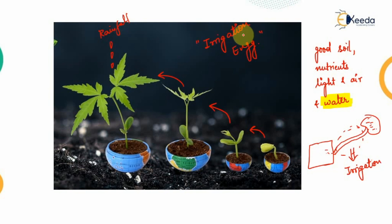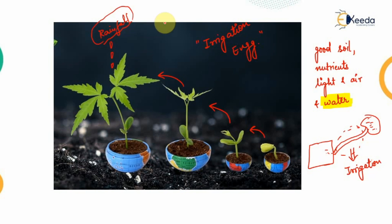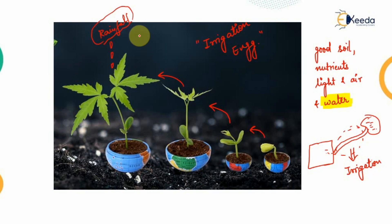The answer is simple. Rainfall in India — because we will be talking majorly about Indian conditions — is not very persistent. There is a particular season with a lot of rainfall, otherwise there is a dry season. Different crops grow at different times of the year, so we need a regular supply of water and cannot be completely dependent upon rainfall.